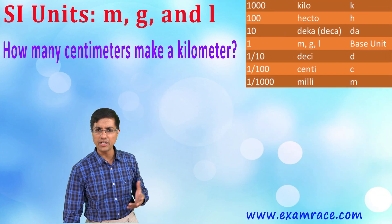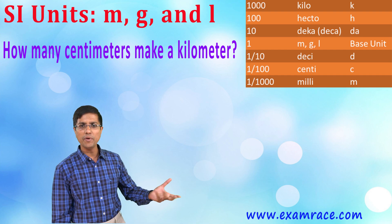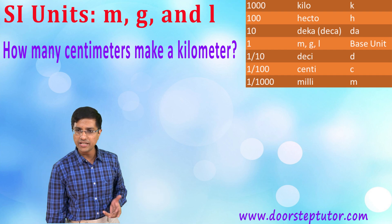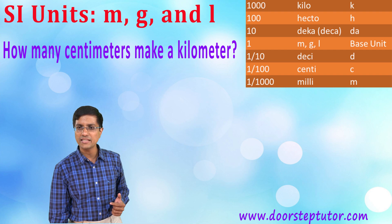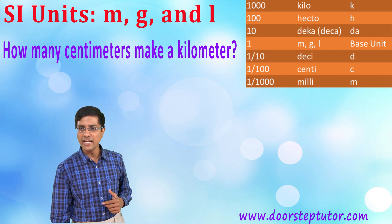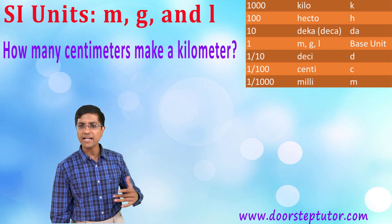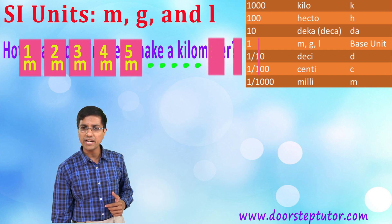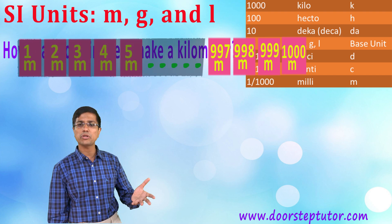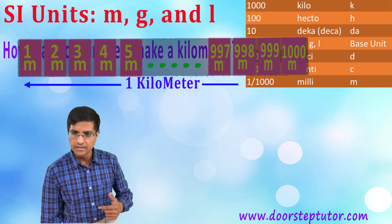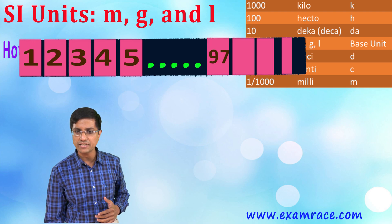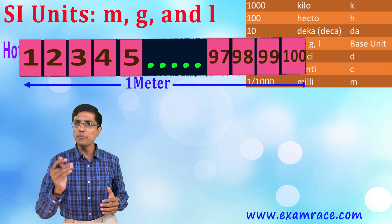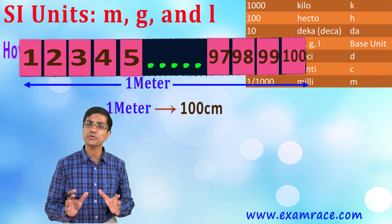Let's take an example from the book: how many centimeters make a kilometer? Starting from the top — in one kilometer there are 10 hectometers, in one hectometer there are 10 decameters, and in one decameter there are 10 meters. So going from kilometer to meter gives a factor of 1000 — there are 1000 meters in one kilometer. Then going from meters down to centimeters gives a factor of 100.